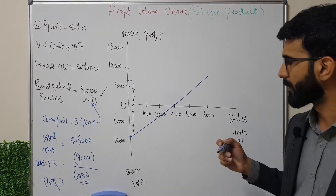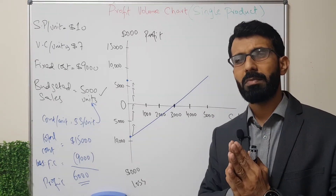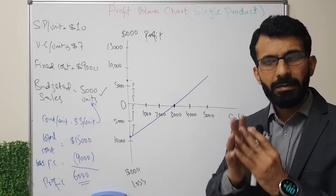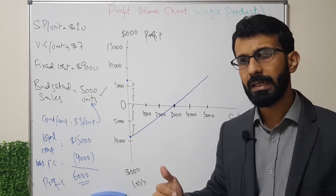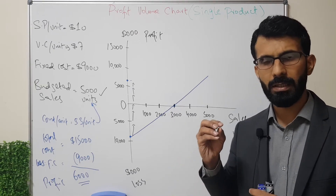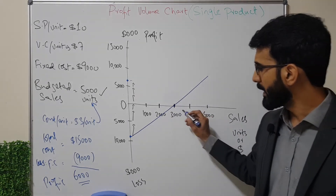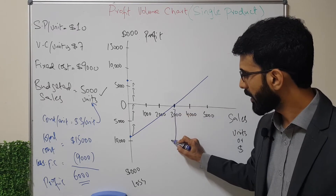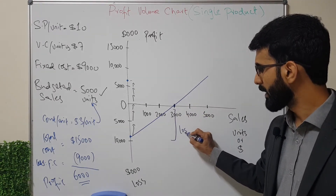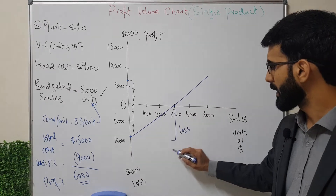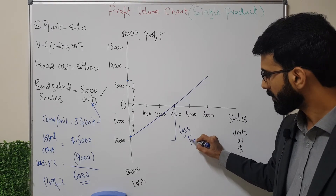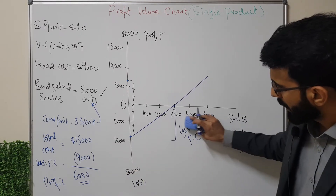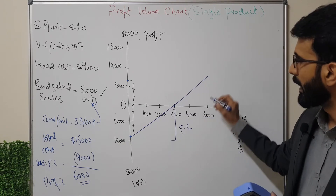In an exam, you will not be asked to draw the diagram. Instead, you will be given a diagram and asked questions such as: what is the fixed cost, where is the break-even point — without doing any calculation. The point of intersection on the graph is the break-even point, and the loss area below zero is exactly equal to our fixed cost.